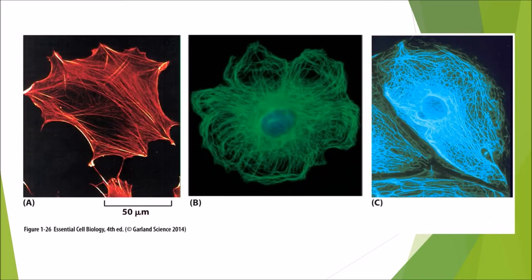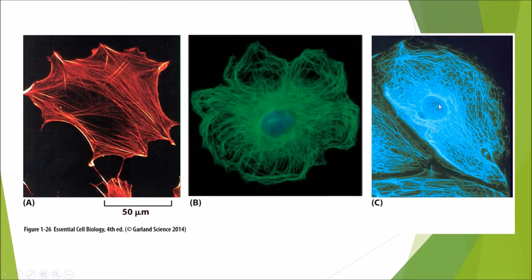This is just a diagram showing you all the different filaments. Actin filaments are displayed going all the way around the cell and can be found mainly towards the outside of the cell. Microtubules extend all the way around the cell. And intermediate filaments fill up all the spaces in between.